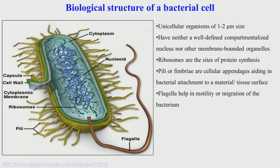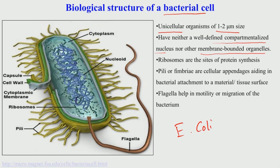This slide shows the widely known bacterium E. coli, Escherichia coli. It is a unicellular organism — a typical prokaryotic cell — with a size of 1 to 2 microns. The fundamental difference between a bacterial cell and a eukaryotic cell is that the bacterial cell does not have a well-defined compartmentalized nucleus or other membrane-bounded organelles. The DNA is dispersed throughout the cytoplasm, and ribosomes are also present, serving as the site for protein synthesis.